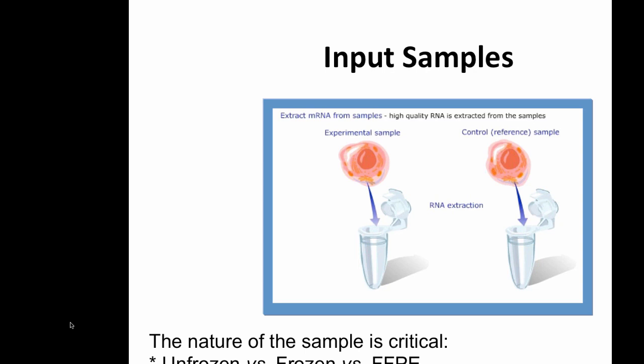One easy aspect of experimental design to think about is the nature of your input samples. In any array experiment, you start with a sample and extract RNA. You would think nobody would do something silly like compare total RNA preps to poly-A RNA preps, but it's really, really common. For example, if I'm studying anaplastic thyroid cancer with an incidence of one or two per year in Canada, I might take four published data sets and integrate them with mine to increase statistical power.